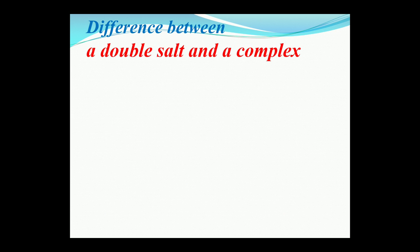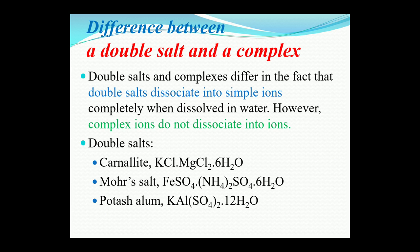What is the difference between a double salt and a complex salt? Double salts dissociate into simple ions completely when dissolved in water; however, a complex ion does not dissociate into simple ions. This is the key difference between a double salt and a complex. A few examples of double salts: the first is carnalite, that is KCl·MgCl₂·6H₂O.